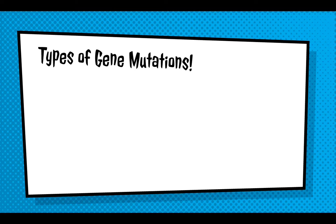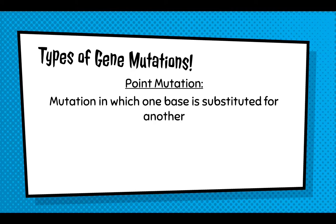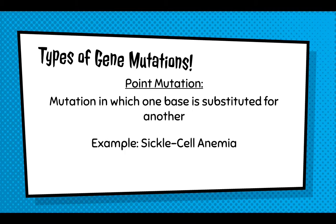A couple types of gene mutations. We have point mutations, which are where one base is substituted for another — like the sentence where I changed it to 'the rat cat ate the tat.' That sentence makes no sense, but I only changed one letter for another. An example of this would be sickle cell anemia.